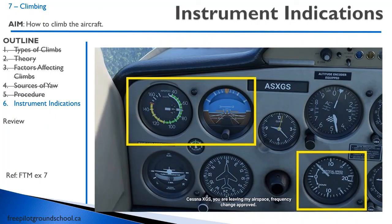As you just saw in the video, there are some important instrument indications in a climb. The airspeed indicator will show a speed that's less than cruise speed. The attitude indicator will show a nose-up attitude. The altimeter will be increasing. And the vertical speed indicator on the bottom right will show a positive trend, indicating a climb.